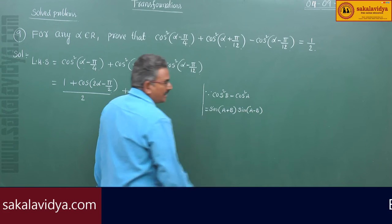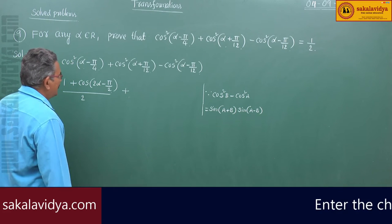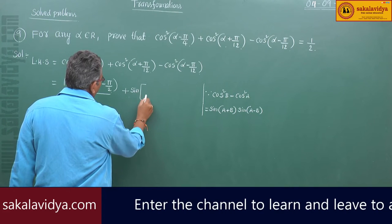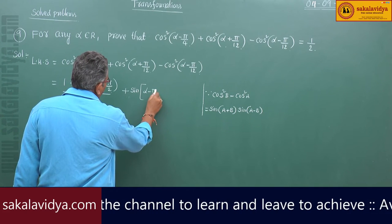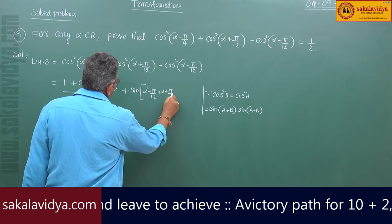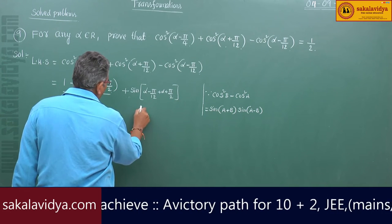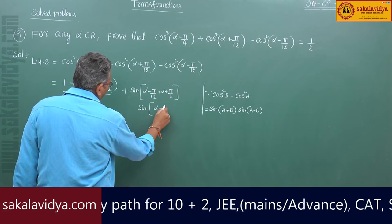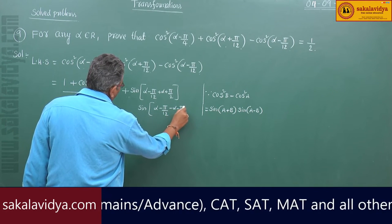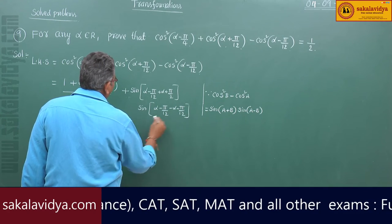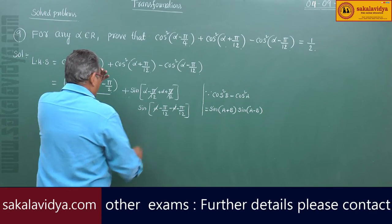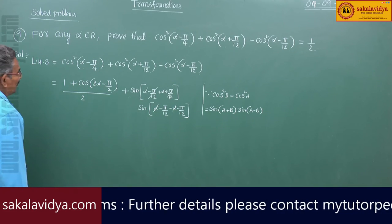Using this identity we can write sin of (alpha minus pi by 12 plus alpha plus pi by 12) into sin of (alpha minus pi by 12 minus alpha minus pi by 12). The pi by 12 terms get cancelled and the alpha terms get cancelled.